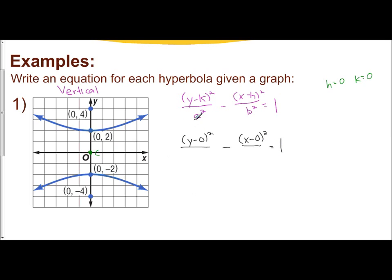All right, so a. What do we know about a? We know a is the distance from the center to your vertices. And so how far is it from 0 up to 2? And that would be 2 units. So a is 2. So you're going to have a 2 squared on the bottom.